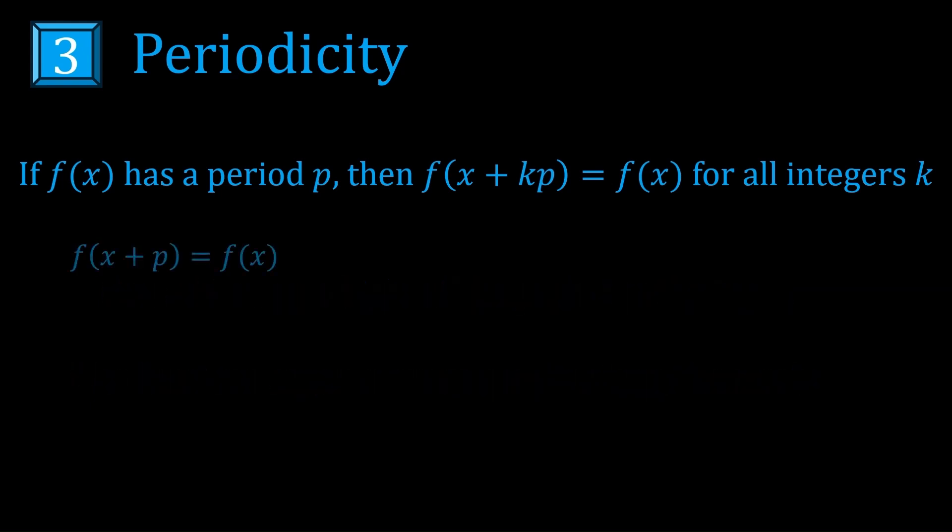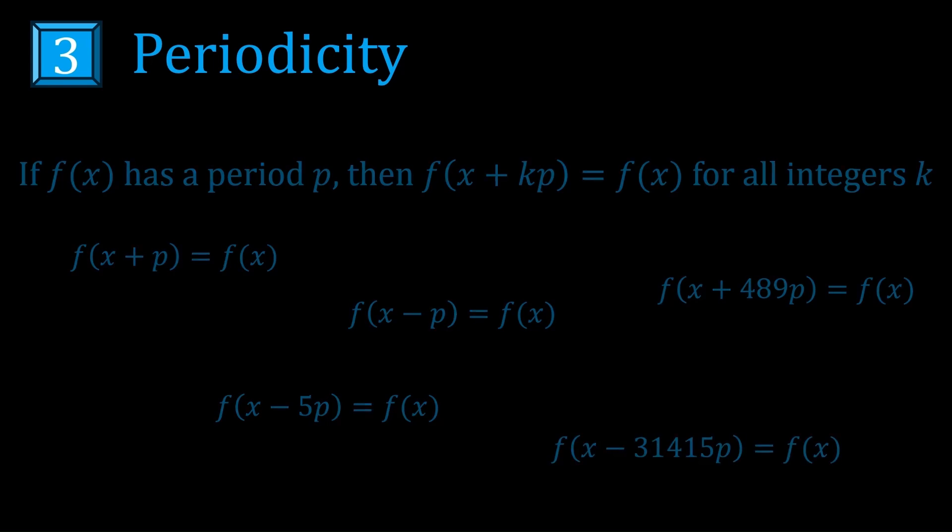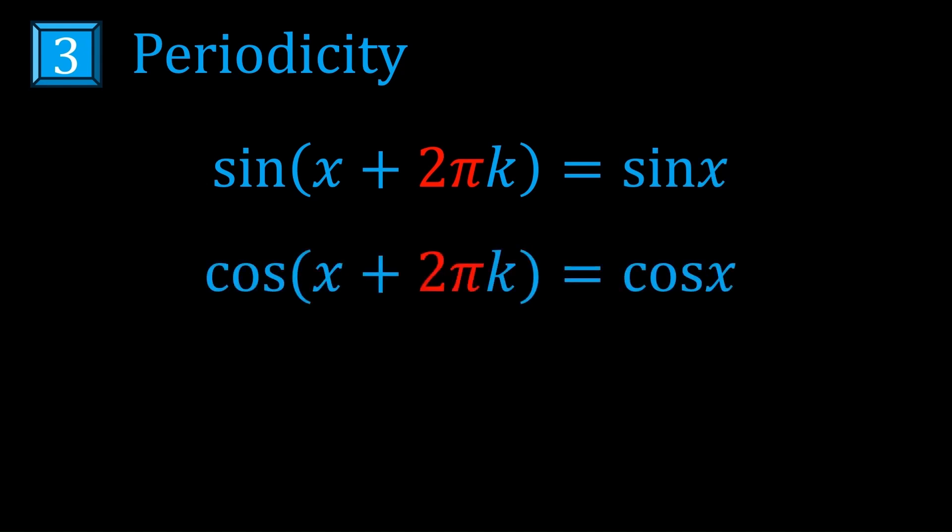Some examples of how this is useful is when you have f of x plus p, or f of x minus p, or anything like that, you can just ignore the multiple of p. This is useful because the trig functions are periodic. Sine x has a period of 2pi, so does cos x, but tan x has a period of pi. So this is true for any integer k. You can see how this applies if you graph the functions on desmos.